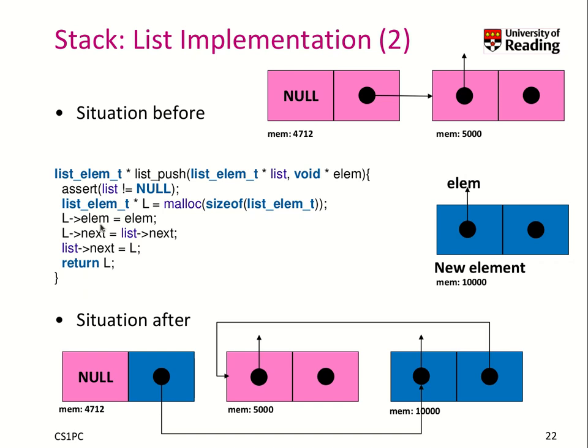Then we have to change the pointers. In this case, we take the list head, which is our previous head, and we let it point to this newly created element. So these three lines create this new element and set the values. We set the element to be this user-specified element.